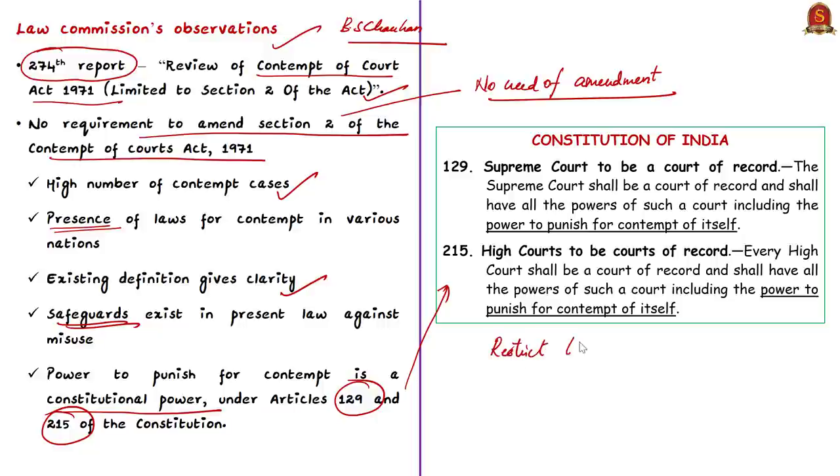Many suggest amending the Act to allow healthy criticisms on the judiciary in a democracy. What we can say is contempt of court is relevant, but its usage should be restricted — meaning the law can be modified to restrict its usage. That is all about this discussion on contempt of court.